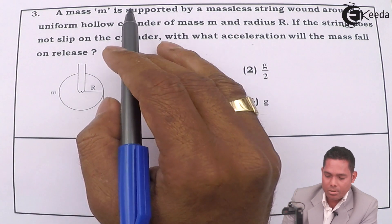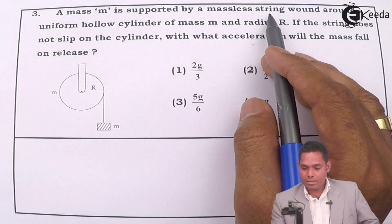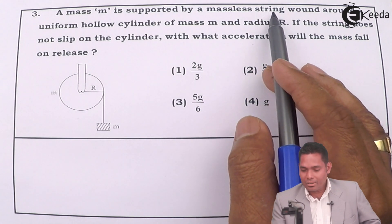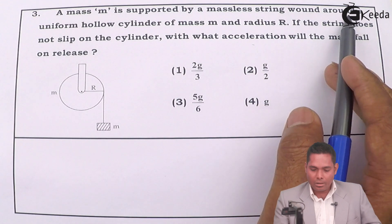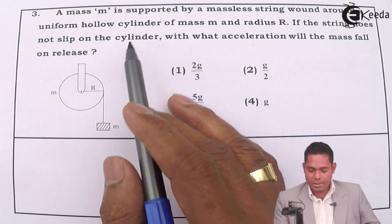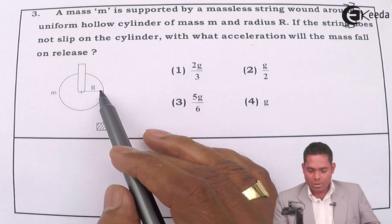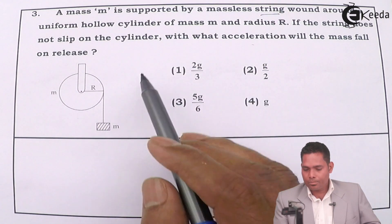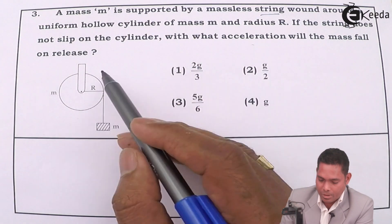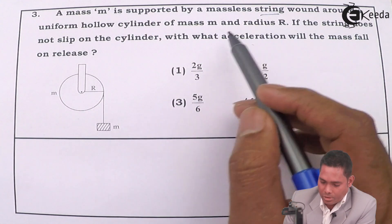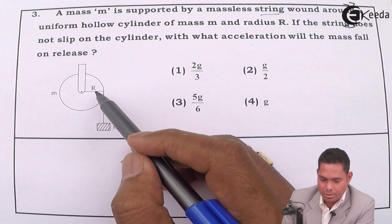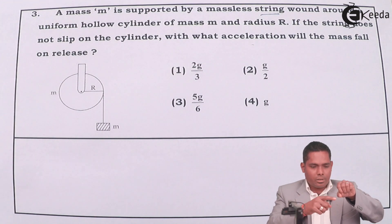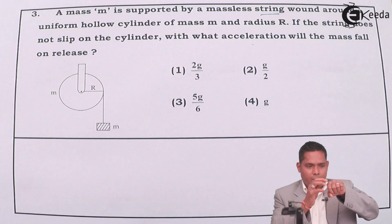Question number 3. A mass M is suspended or supported by a massless string wound around a uniform hollow cylinder. This is a pulley-type object — a hollow cylinder on which the string is wound. The cylinder has mass M and radius R. So basically there is a cylinder on which the string is wound, and there is a block of mass M suspended from it like this.